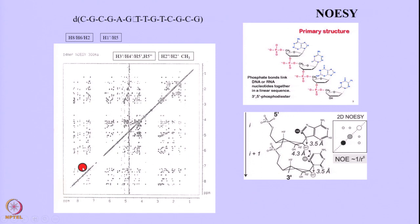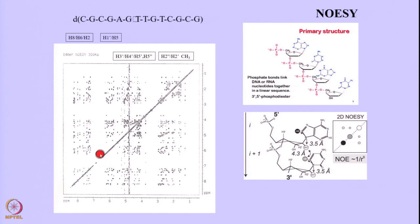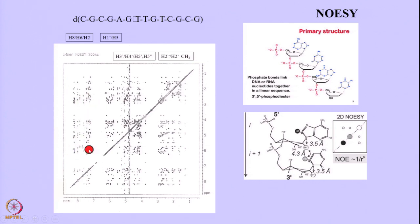So in the anti-conformation you see peaks from the base proton to its own sugar ring protons, but you also see from a base proton to the sugar ring of the next nucleotide at the 5' end — not the 3' end. This provides directionality to the sequential walk. You will see two peaks from each base proton: one to its own H1' and one to the H1' on the 5' end.